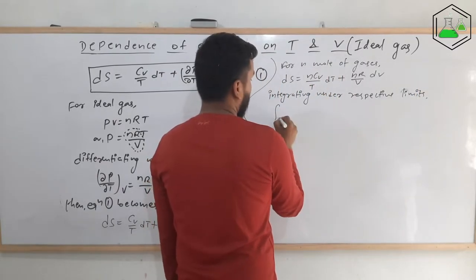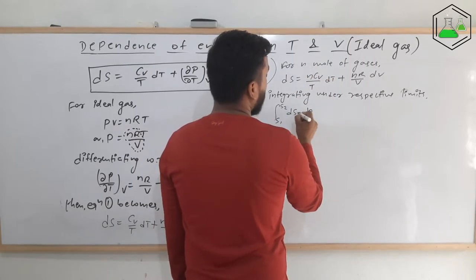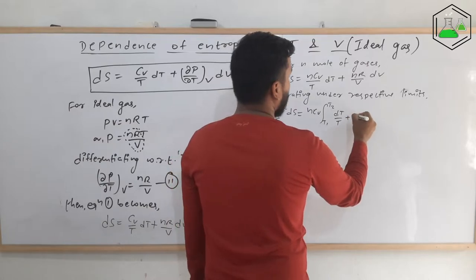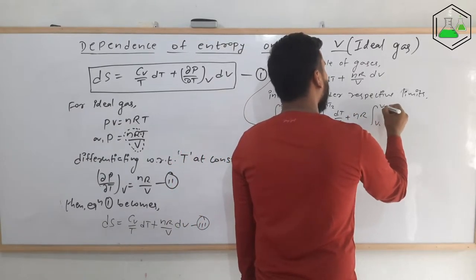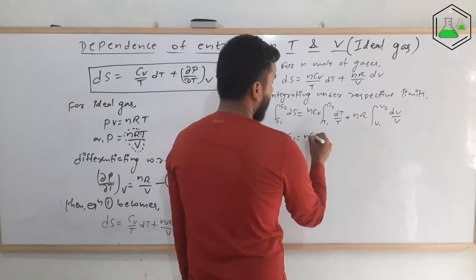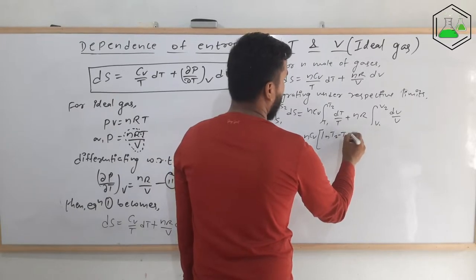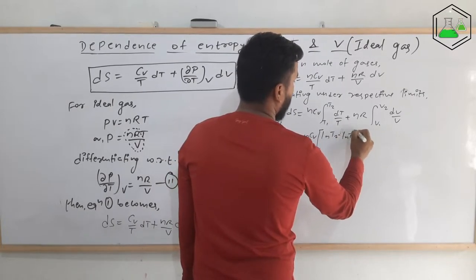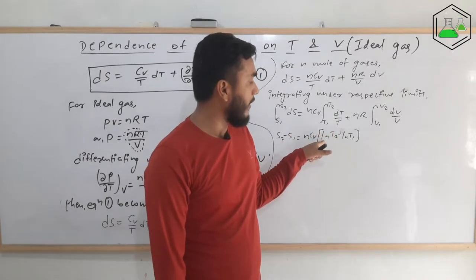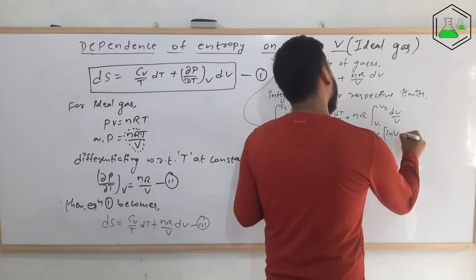Integrating under respective limits, we get: the integral from s1 to s2 of ds equals nCv times the integral from T1 to T2 of dT/T, plus nR times the integral from V1 to V2 of dV/V. This gives s2 minus s1 equals nCv times (ln T2 minus ln T1) plus nR times (ln V2 minus ln V1).